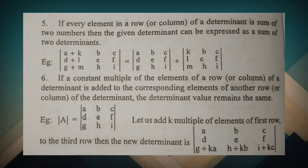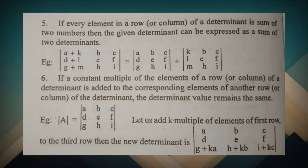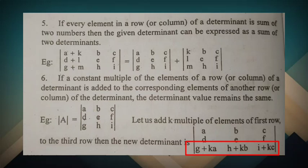For example, the first row is a, b, c; the second row is d, e, f; the third row is g, h, i. We perform an operation on the third row by adding k times the first row: the third row becomes g plus ka, h plus kb, i plus kc. The determinant value remains unchanged. Thank you.